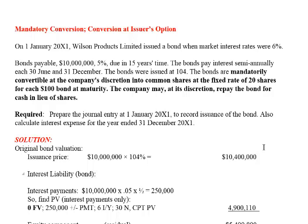Hi folks, welcome to this video on mandatory conversion when you have a convertible bond. Remember that when we have a mandatory conversion, that means it must be at the issuer's option. So if at any point in time you see that a conversion is mandatory, that means the issuer of the bond is going to force you at or before retirement to convert the bond into shares. You can't force the issuer to pay you the lump sum face value of the bond at the end of the term or at retirement.